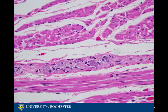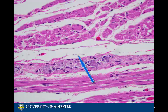Here we see the muscularis externa with ganglion cells. These ganglion cells are part of the myenteric plexus, the main nerve supply to the gastrointestinal tract.